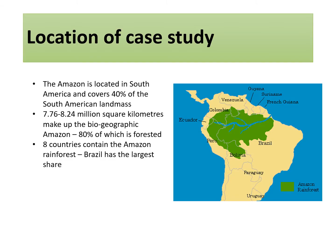Location of case study. The Amazon is located in South America and covers 40% of the whole South American landmass, which is 7.76 to 8.24 million square kilometres. This makes up the biogeographic Amazon, which is 80% covered in forest. Eight countries contain part of the Amazon rainforest, with Brazil having the largest share, making Brazil the most important country in managing the rainforest for future generations.